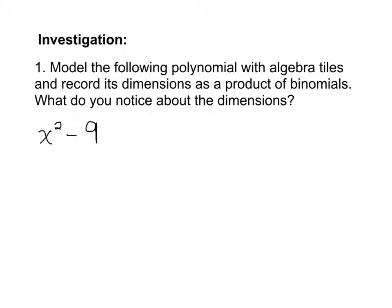To start us off, we are going to look at a little bit of an investigation. There are three parts to the investigation. In the first part we are going to model this polynomial with algebra tiles, record its dimensions as a product of binomials, and then have a look at what we notice about those dimensions. So for our polynomial we have x squared minus 9.